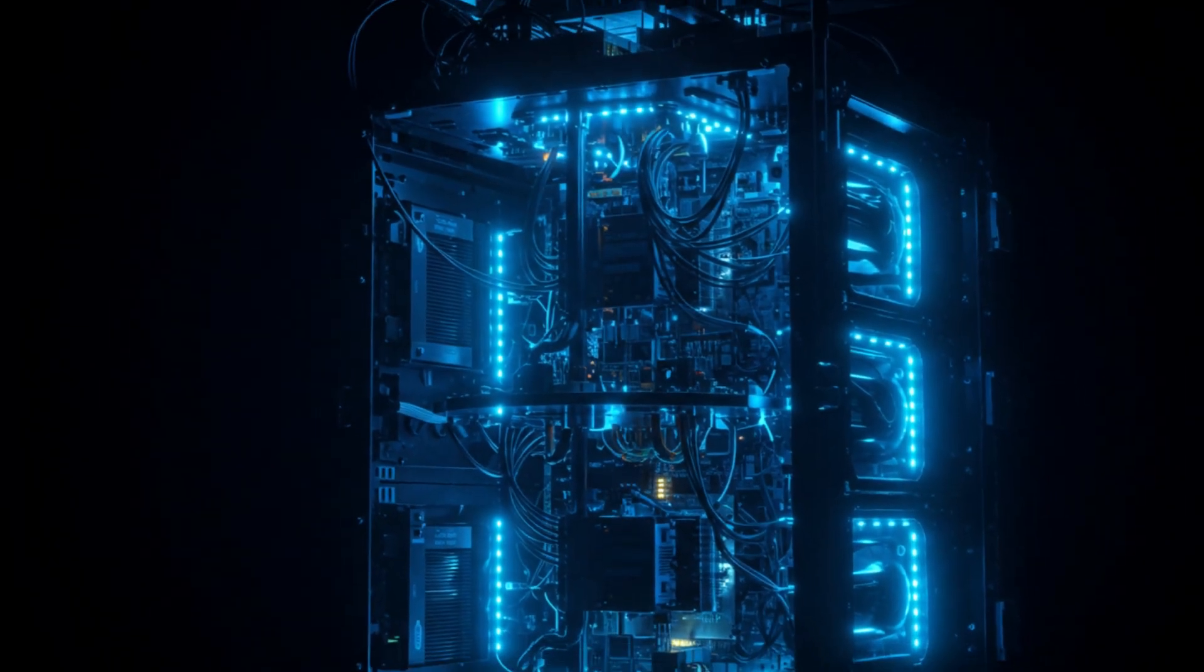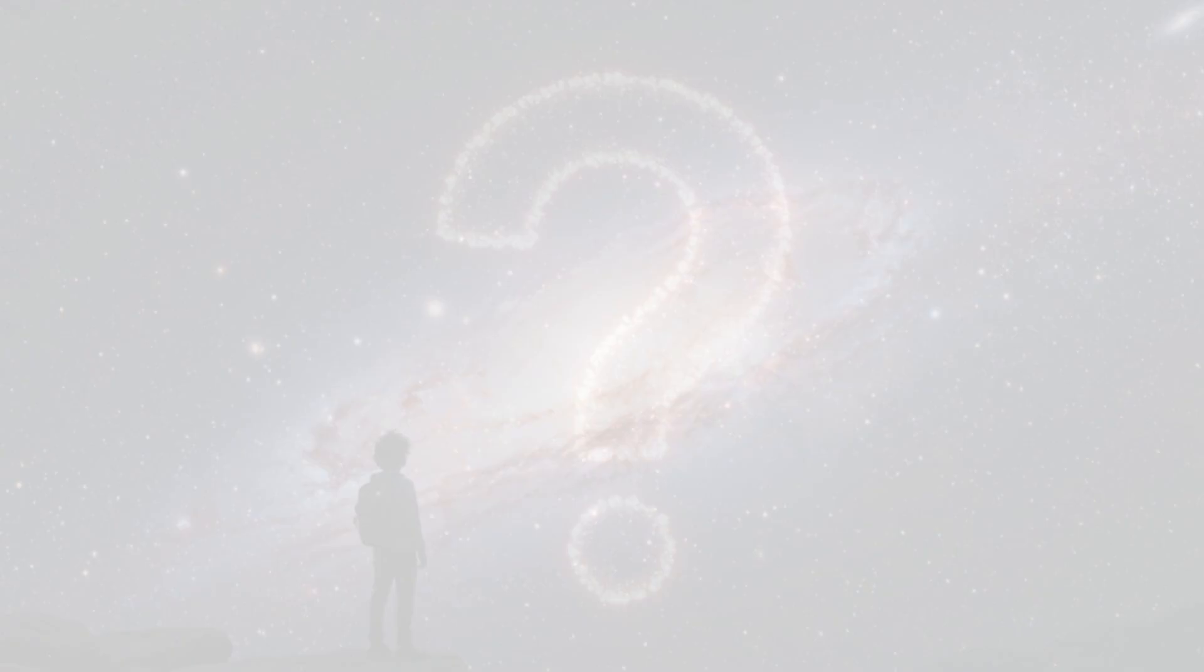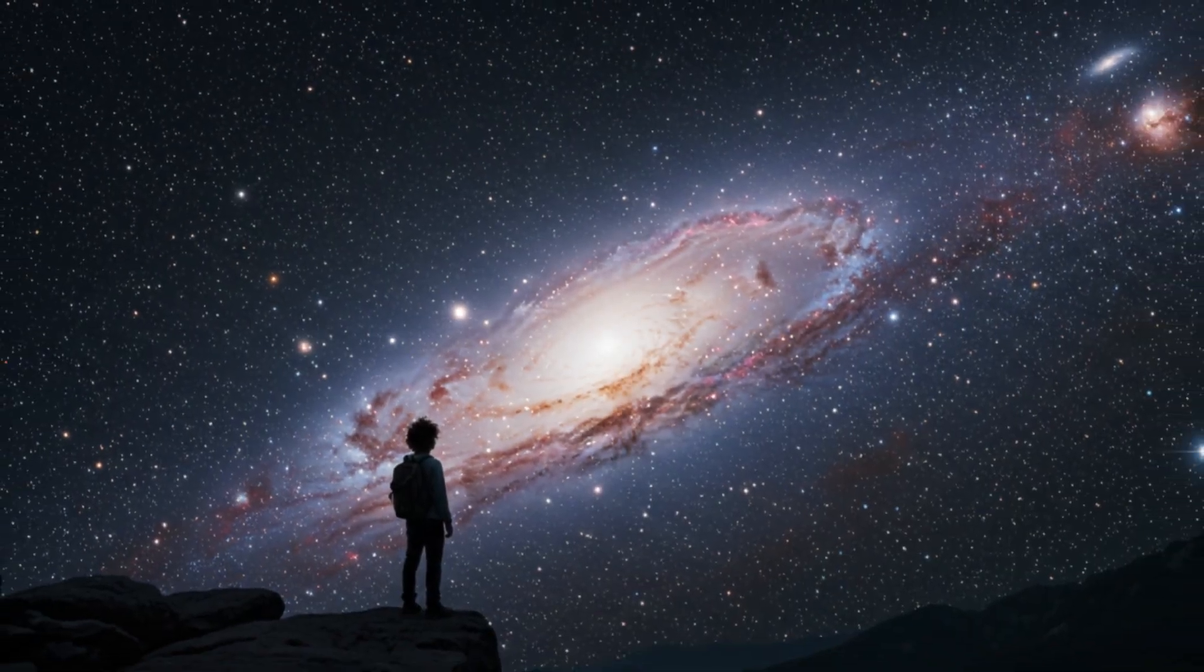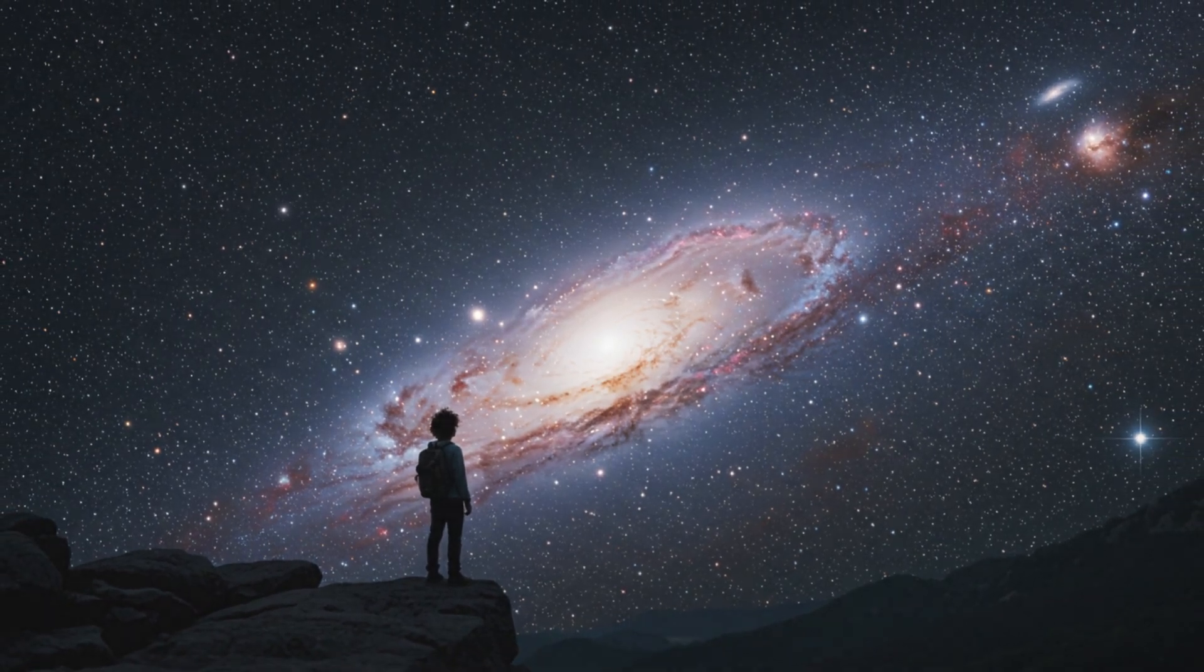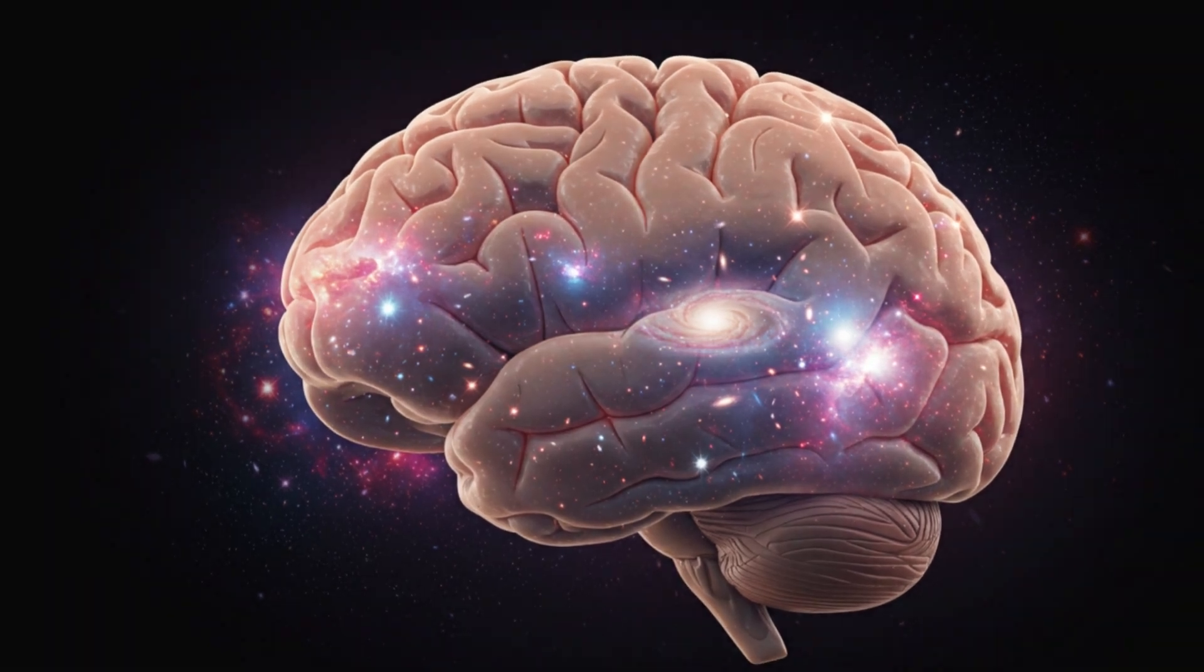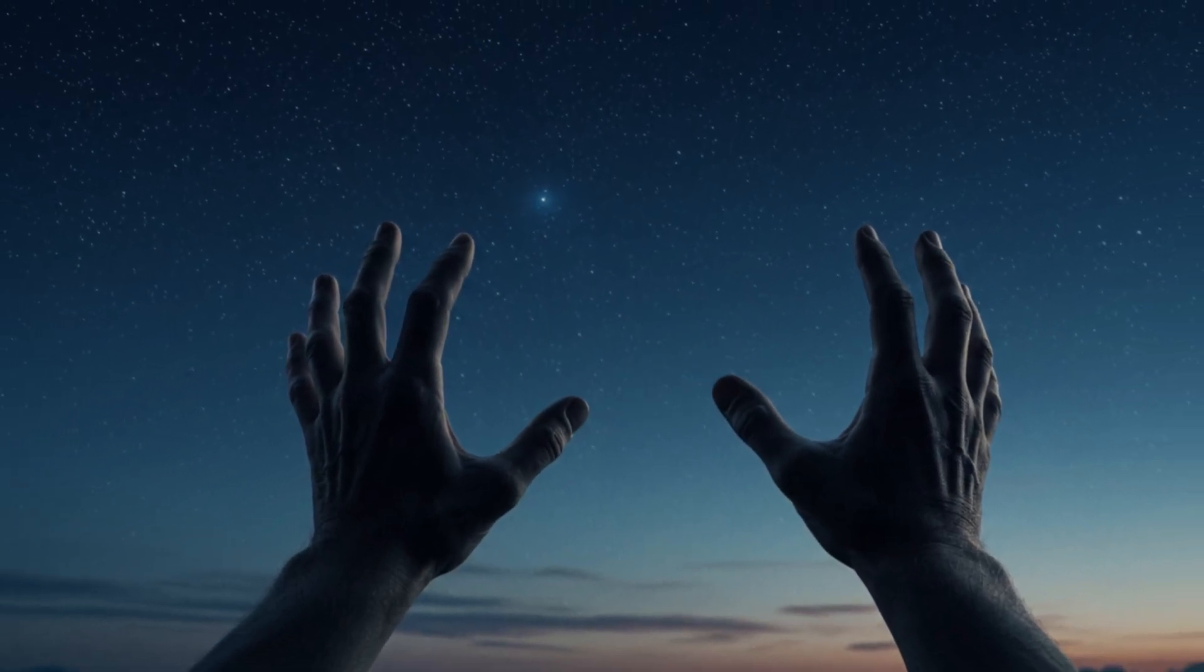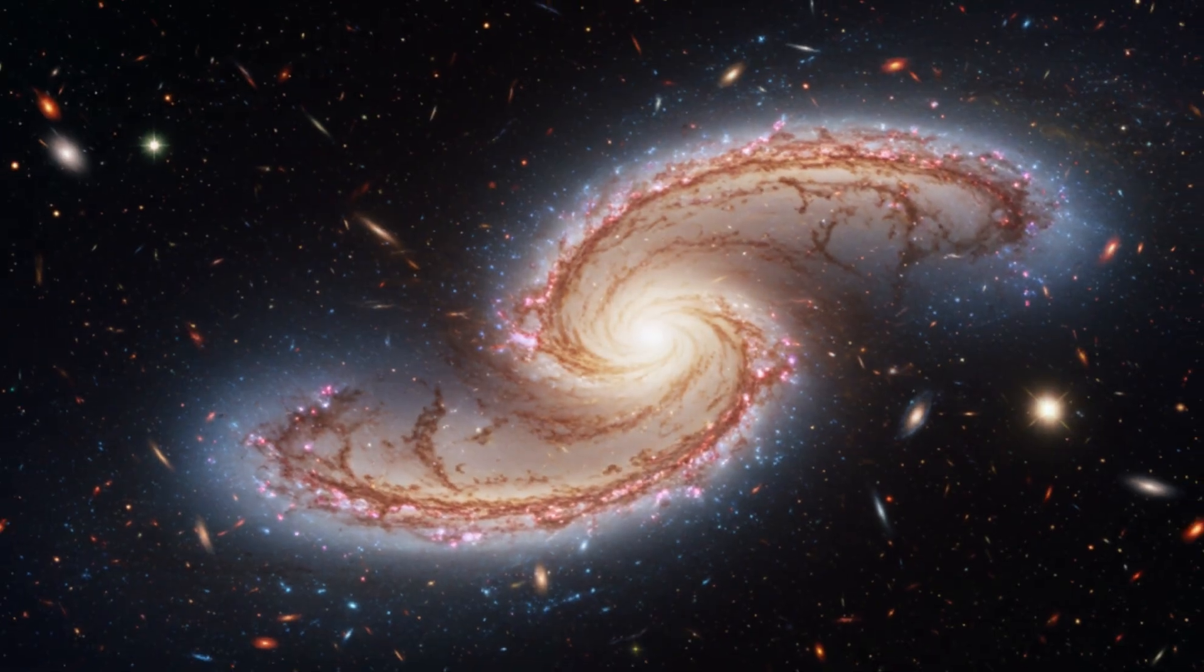Then comes locality. This principle comes straight from Einstein's theory of relativity. It tells us that nothing can travel faster than the speed of light. If you turn on a flashlight here, its beam can't suddenly and instantly affect a star on the other side of the galaxy. There's a built-in speed limit to the universe, and no one gets to break it.